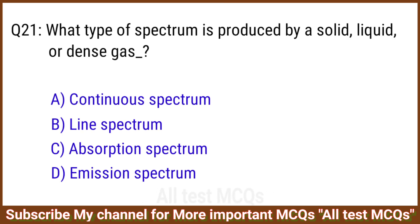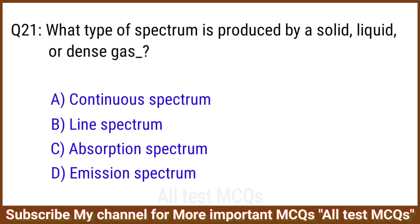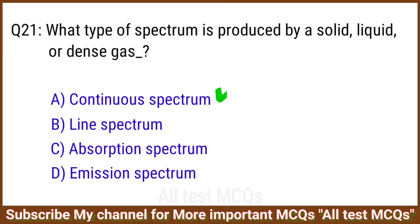Q21. What type of spectrum is produced by a solid, liquid, or dense gas? The right answer is option A: Continuous spectrum.